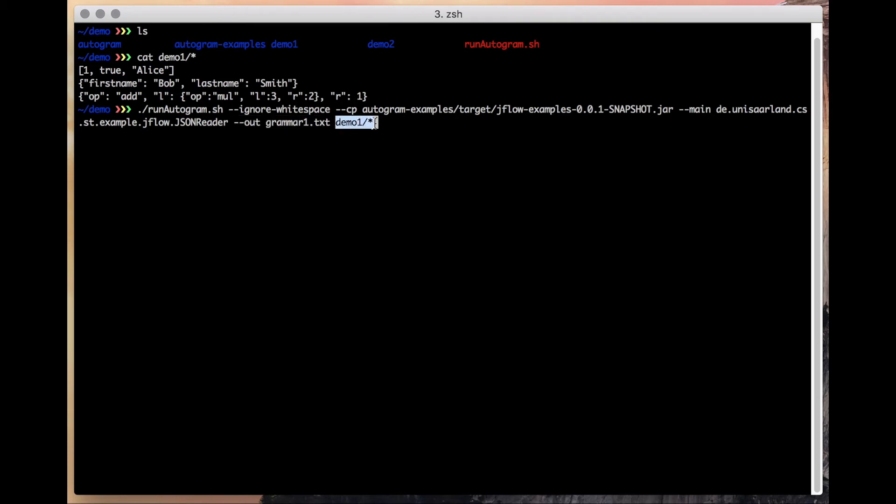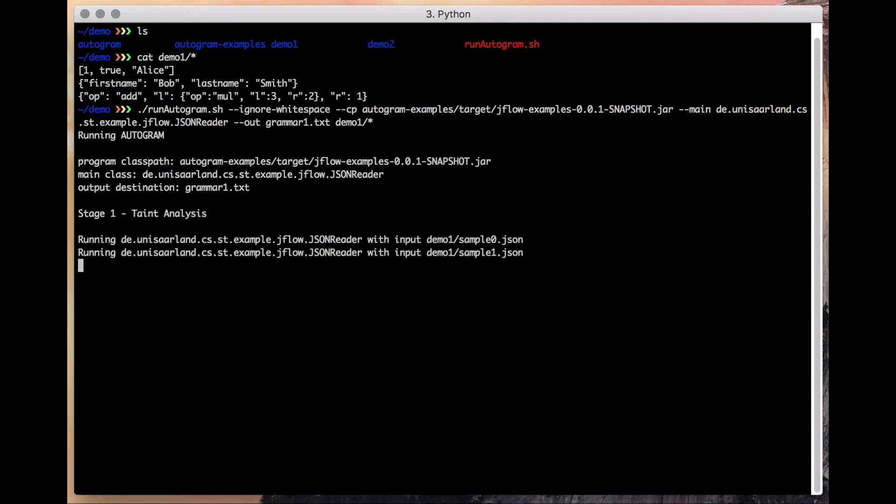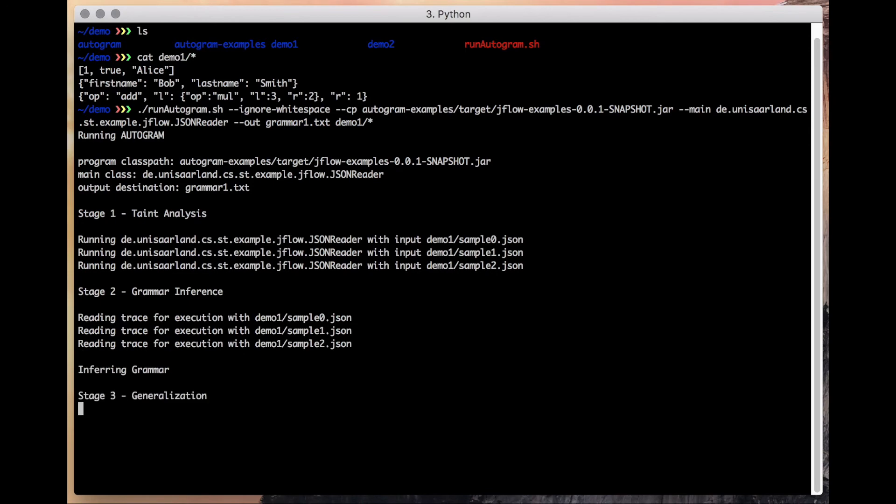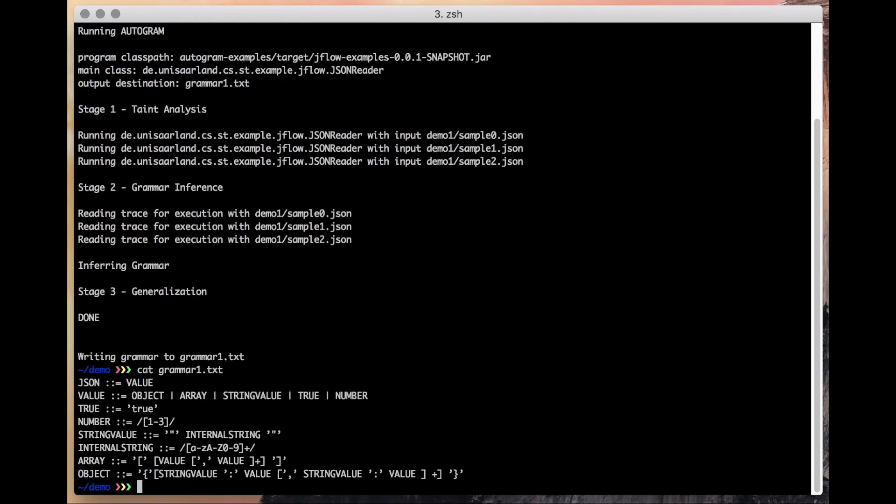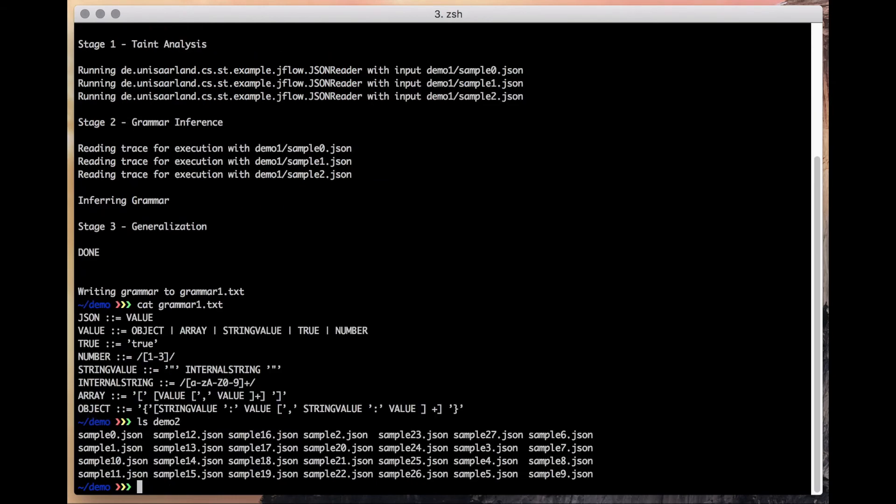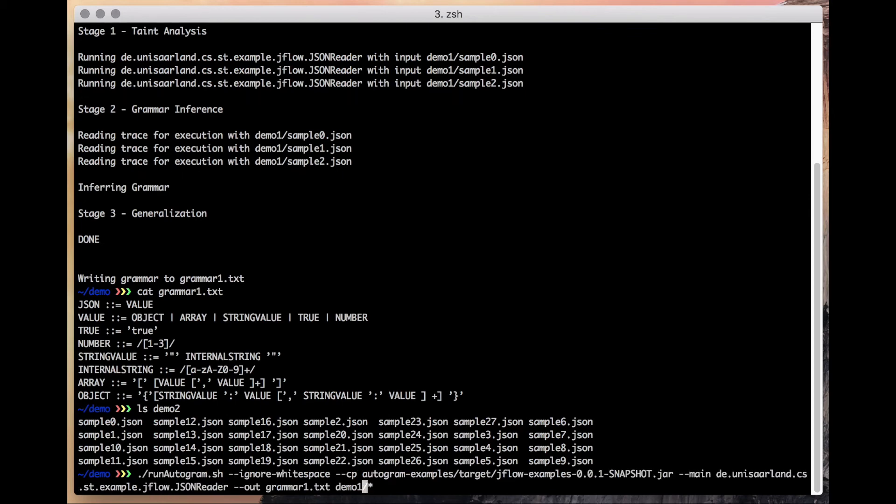In the end we give the samples and we execute this. We speed this up in this video and in the end you can have a look at the grammar which is exactly the grammar we've also seen in the paper, which doesn't yet contain all the features of JSON because we've only seen a limited sample set.